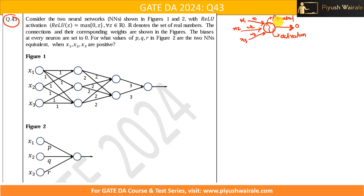This neuron consists of two things: first is the pre-activation function, and second is the activation function. The pre-activation function converts the input into a linear value, while the activation function takes that linear input and converts it into a non-linear output. We have discussed various activation functions — for example, the sigmoid function, rectified ReLU, and the hyperbolic tangent function.